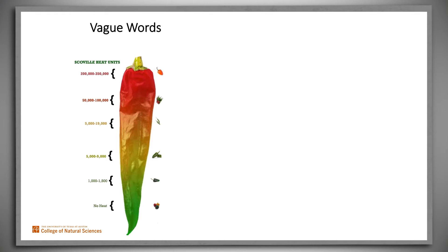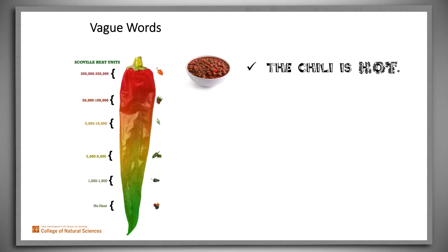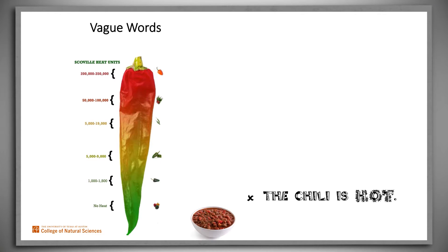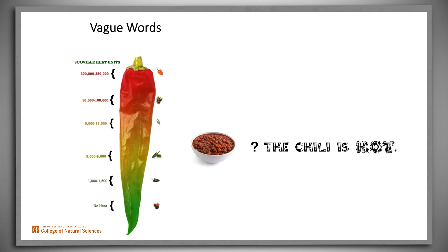But even after we've figured out what property we're talking about, we're not home free. Both meanings of 'hot' are vague. 'This chili is spicy hot.' 'This chili isn't spicy hot.' But what about this one?